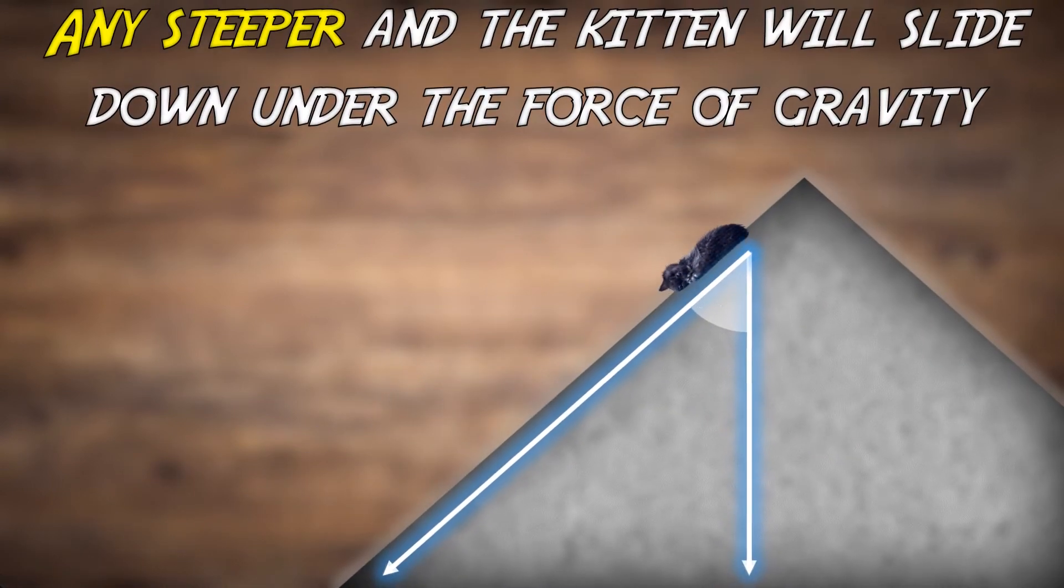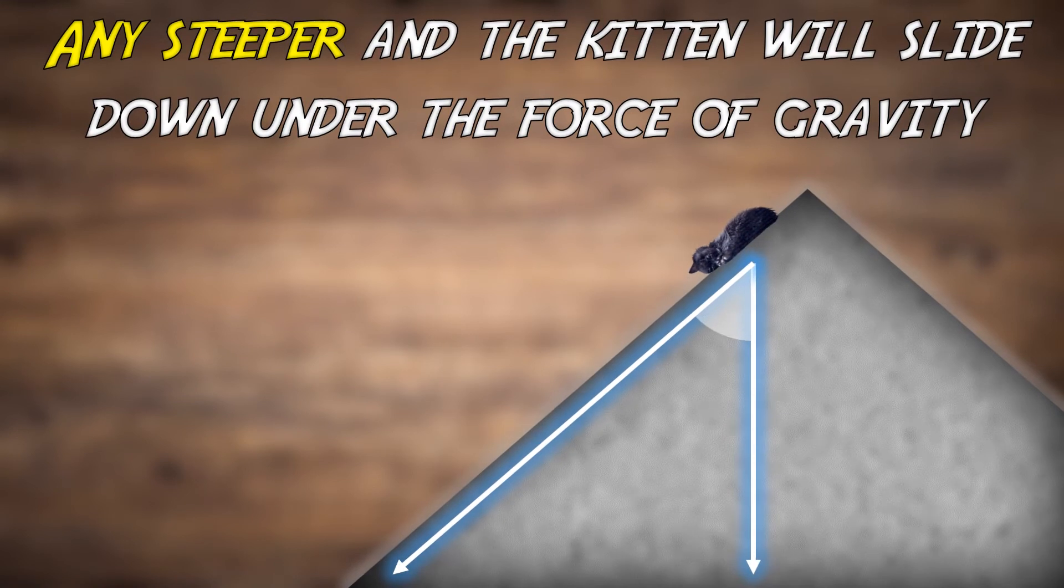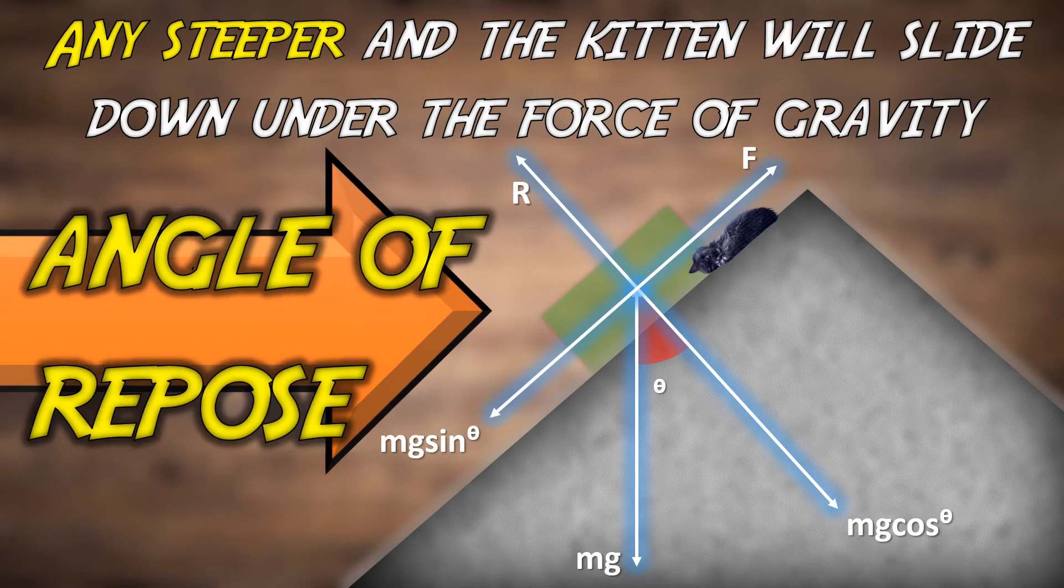Thus, given that any steeper and the kitten will slide down under the force of gravity, this arrangement becomes the angle of repose.